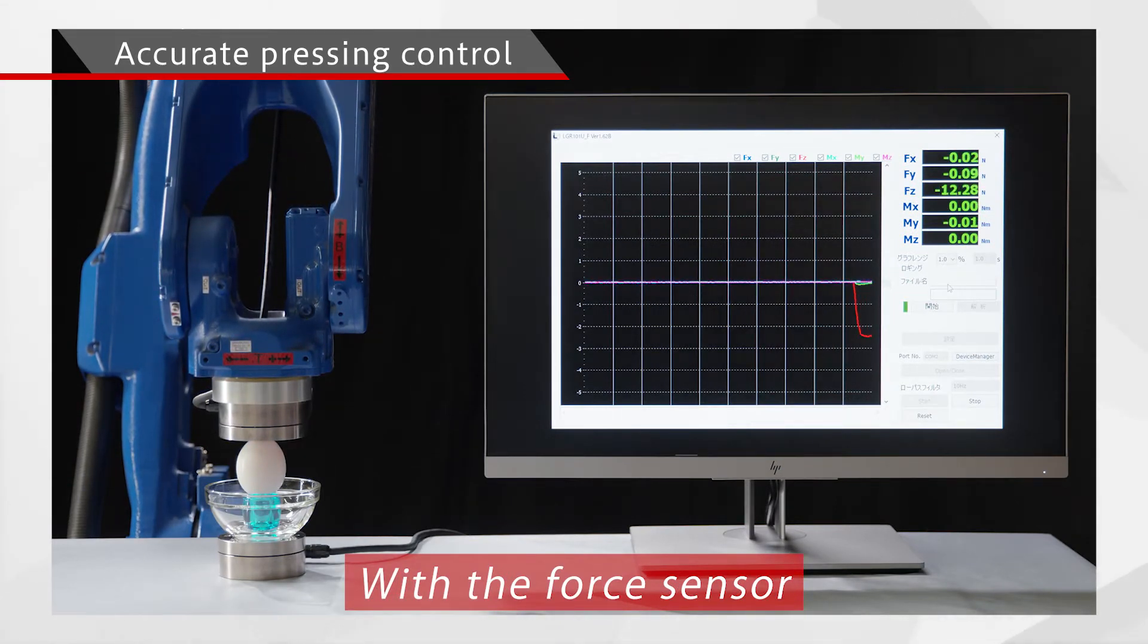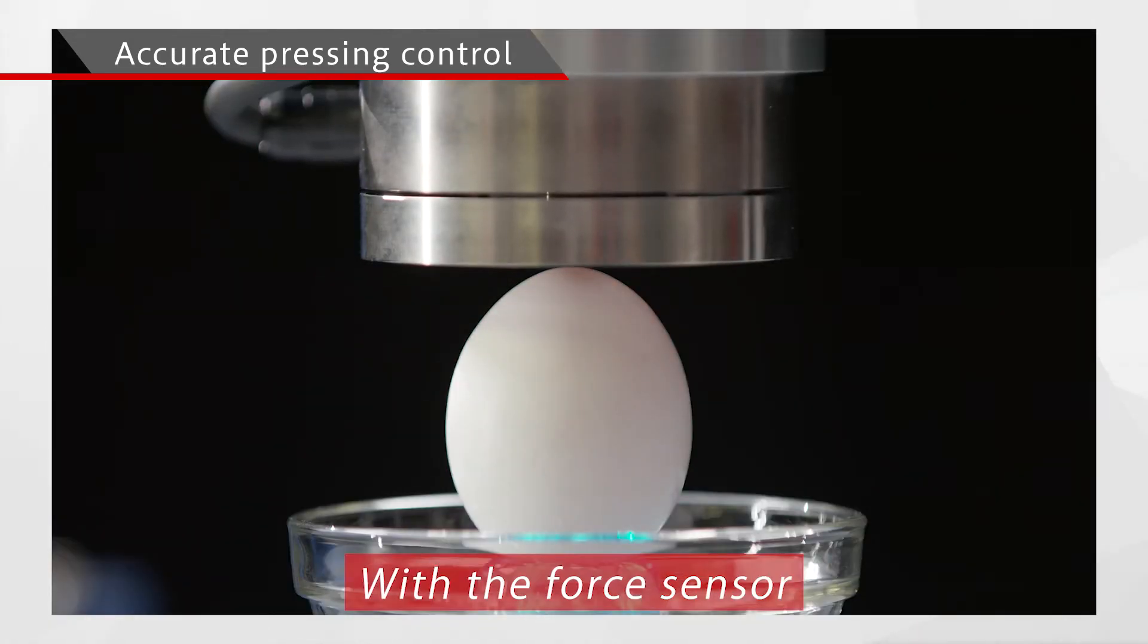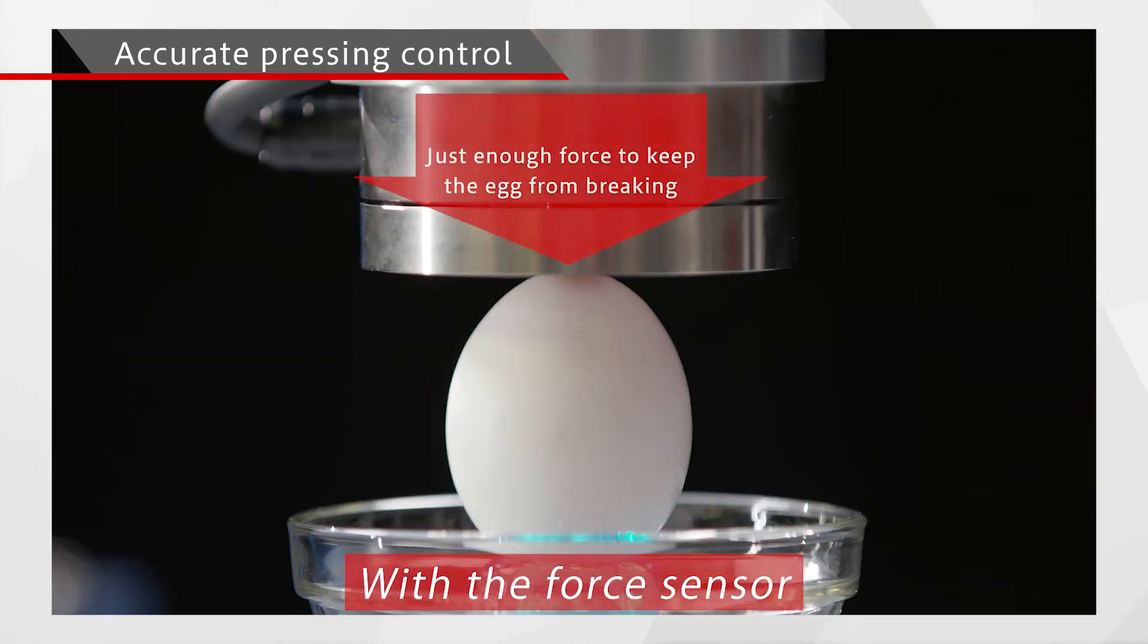The Zixxer has excellent non-linearity and small error between actual load and sensor output. It can give the robot human-like control of force, allowing the robot to make contact and press down on a raw egg without breaking it.